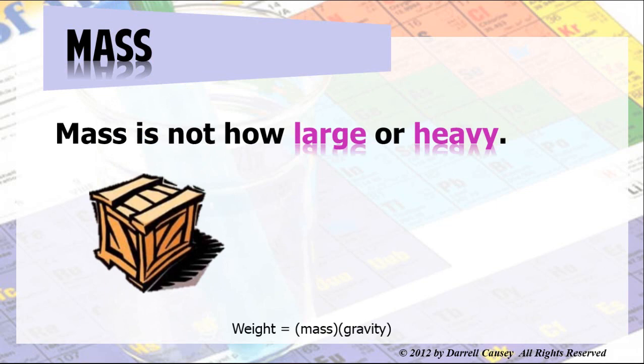So we need to know what mass and volume are. And mass is not how large or heavy something is. Mass has more to do with the inertia of something. Mass has to do with the resistance to motion. How heavy or large something is has to do with weight. And that's just the effect of gravity on a mass.